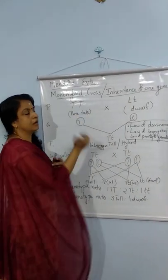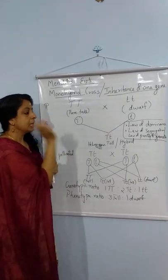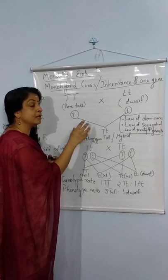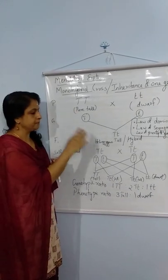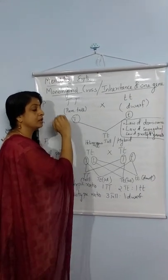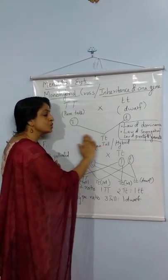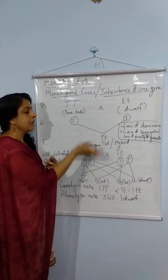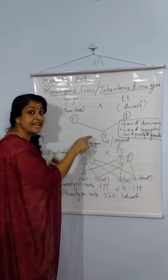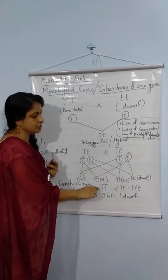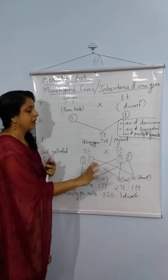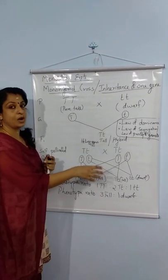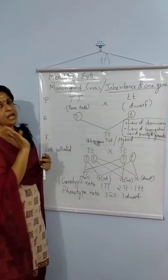When he crossed a tall plant with a dwarf plant, in F1 all plants were tall. That means tallness is the dominant character, and dwarf is the recessive character — it was not shown in the F1 generation. So the F1 generation always shows the dominant character. But when the F1 plants are self-pollinated, in F2 the recessive character will appear again, but only in smaller numbers. This character is called the recessive character, according to Mendel.